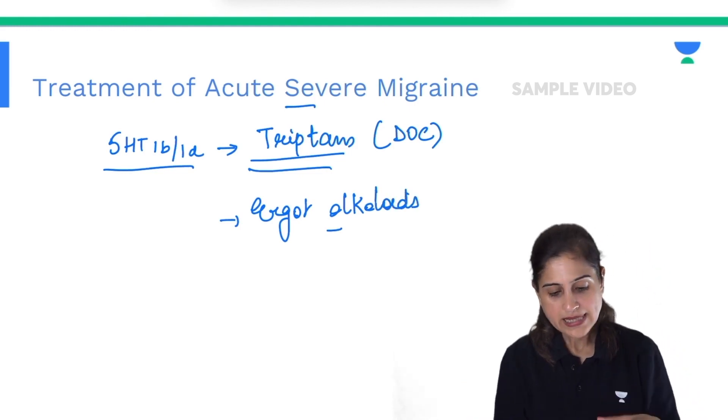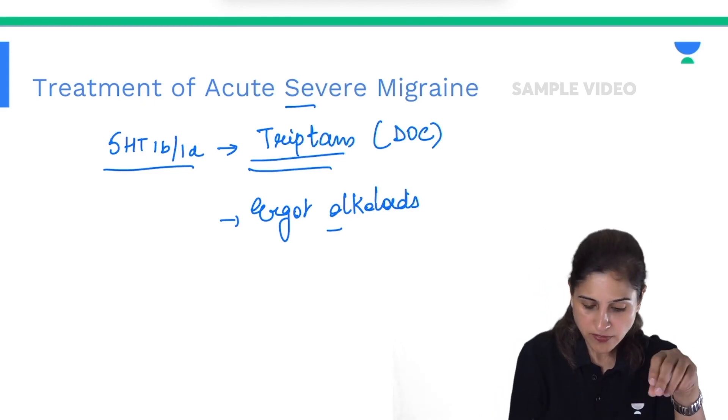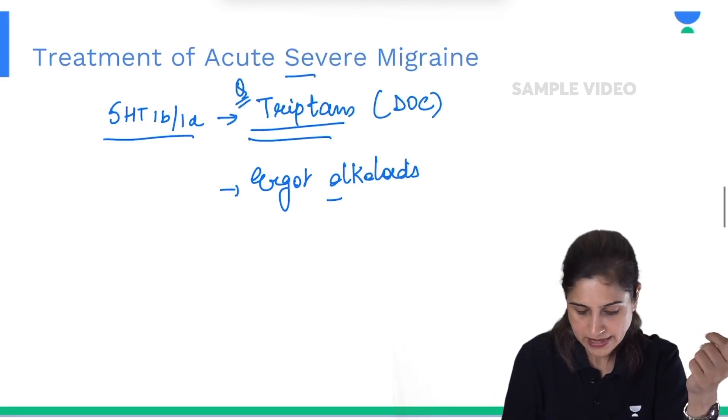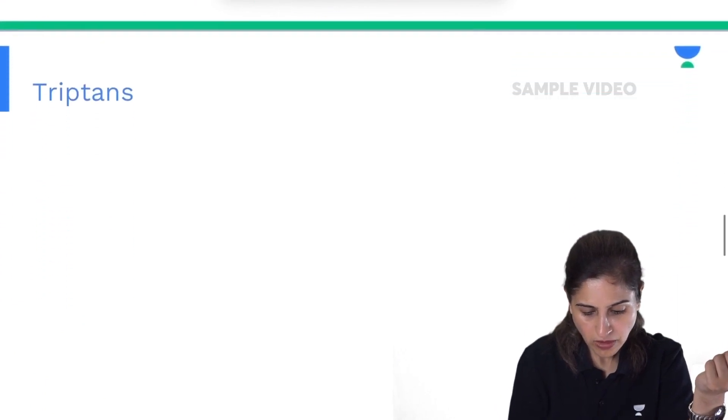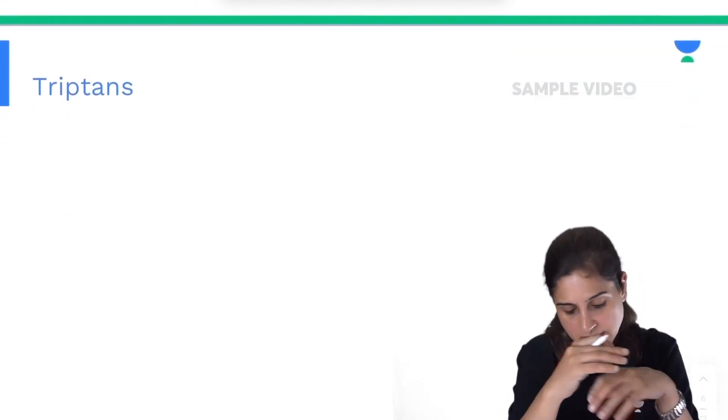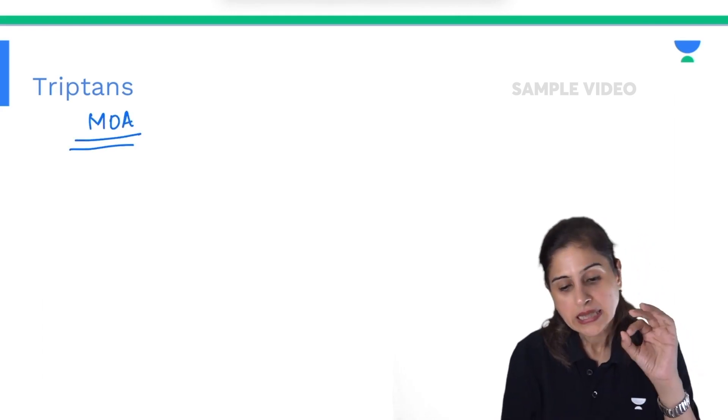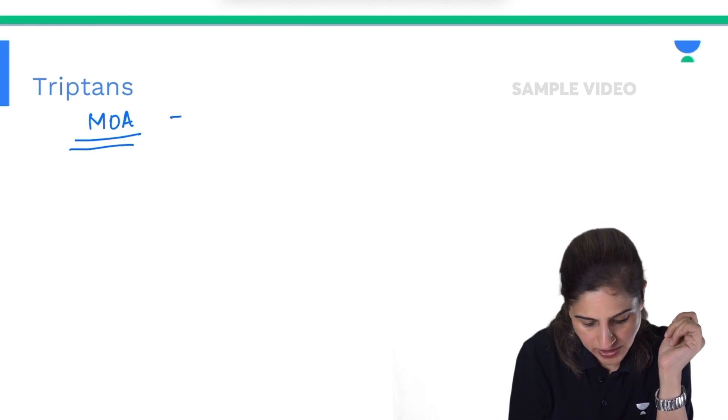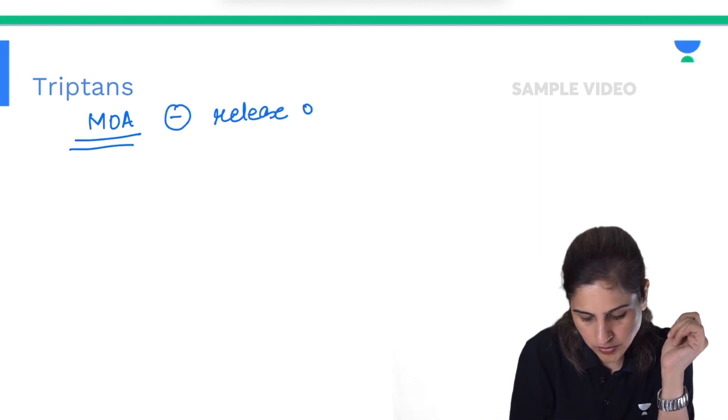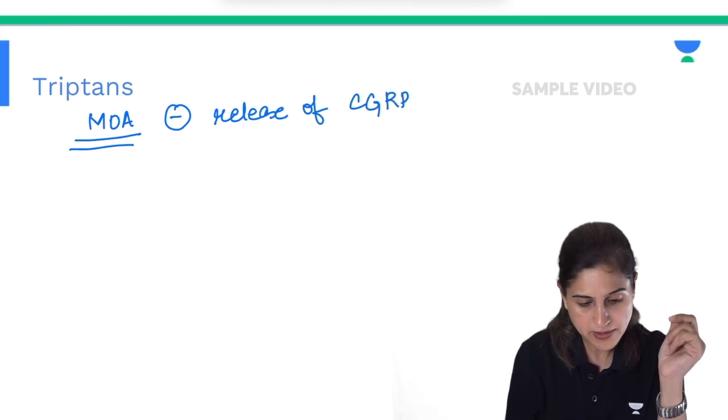Now let's discuss triptans, because they are very important for the examination point of view. What is their mechanism of action? Number one, they are going to inhibit the release of CGRP.